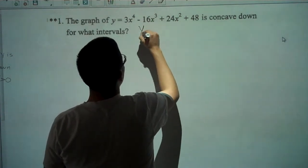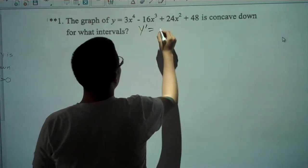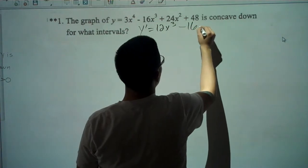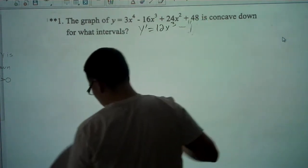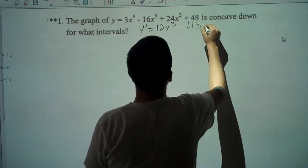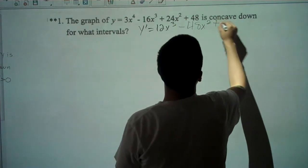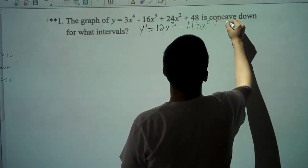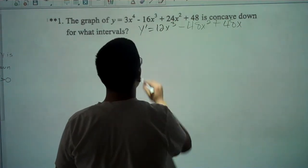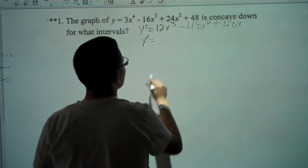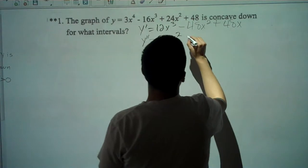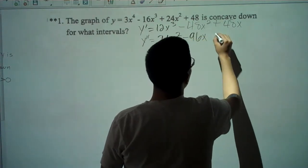y prime equals 12x cubed minus 48x squared plus 48x. Now we have to look for the y double prime. y double prime equals 36x squared minus 96x plus 48.